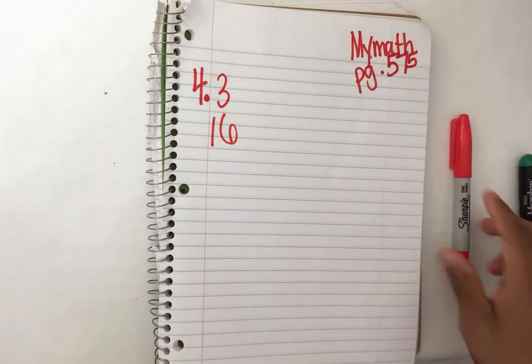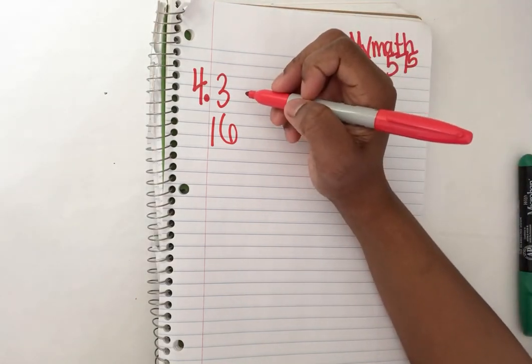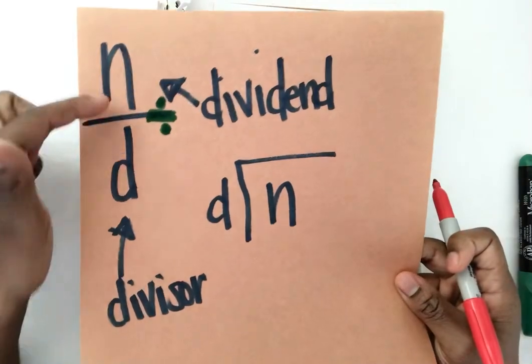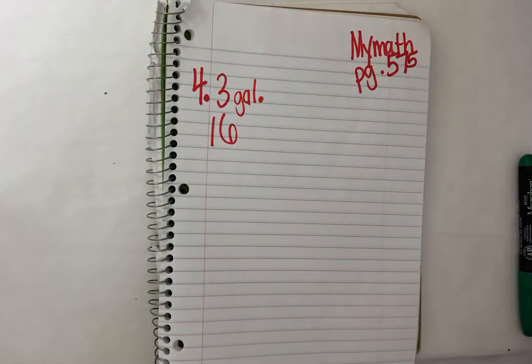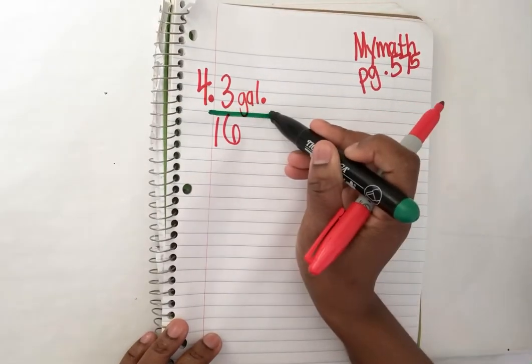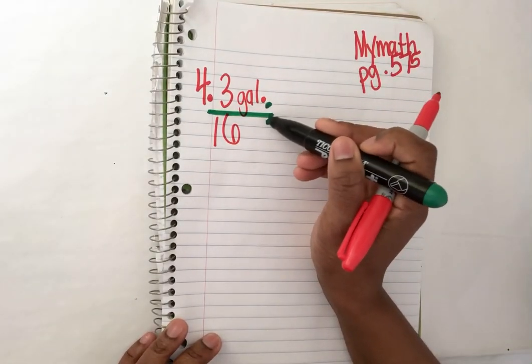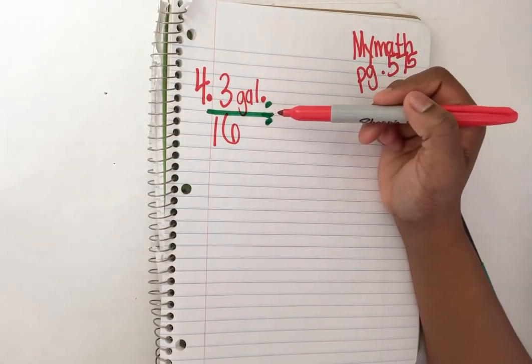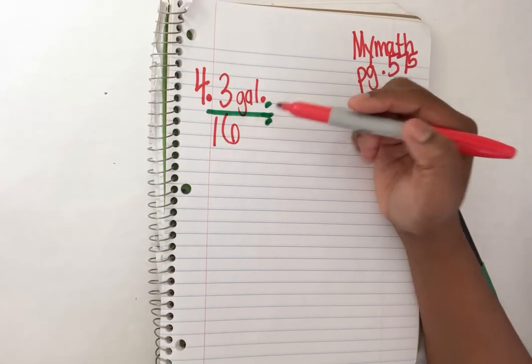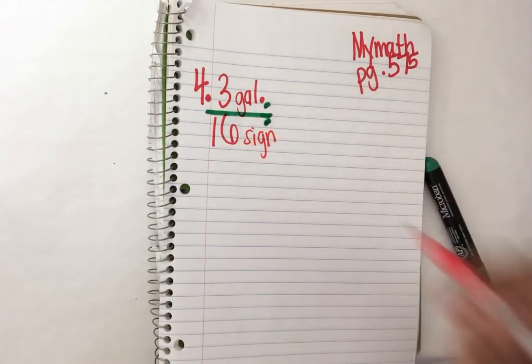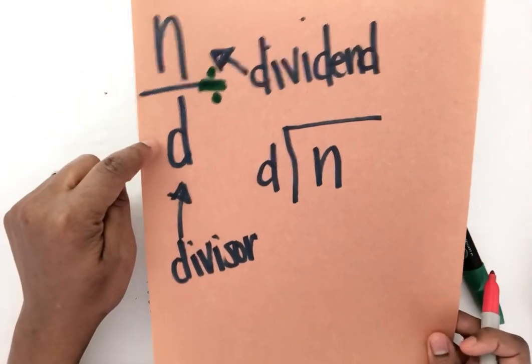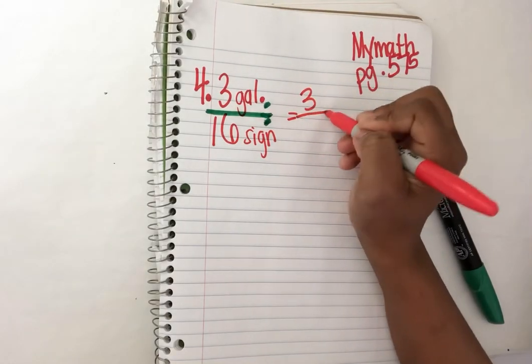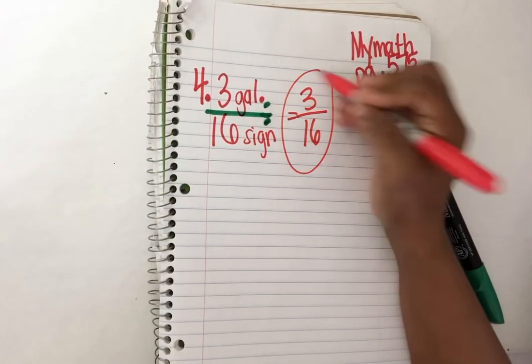Now in the problem, they told me the first number, three gallons first. So I know that that's going to be the numerator of my fraction. So I'm going to put in my fraction bar. Fraction bar means divide. Three gallons and then it says we're used to paint 16 wooden signs. I know 16 is going to be the denominator of my fraction. So my answer is going to be three sixteenths as a fraction.